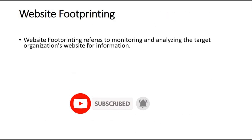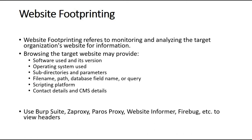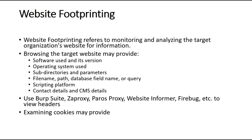Website footprinting refers to monitoring and analyzing a target organization's website for information. Browsing the target website may reveal the software used, version, operating system, subdirectories, parameters, file names, database or query scripting platforms, contact details, and CMS details. Tools like Burp Suite, ZAP Proxy, Paris Proxy, Website Informer, and Firebug can be used. You should also examine cookies, HTML source code, view page source, and view headers.